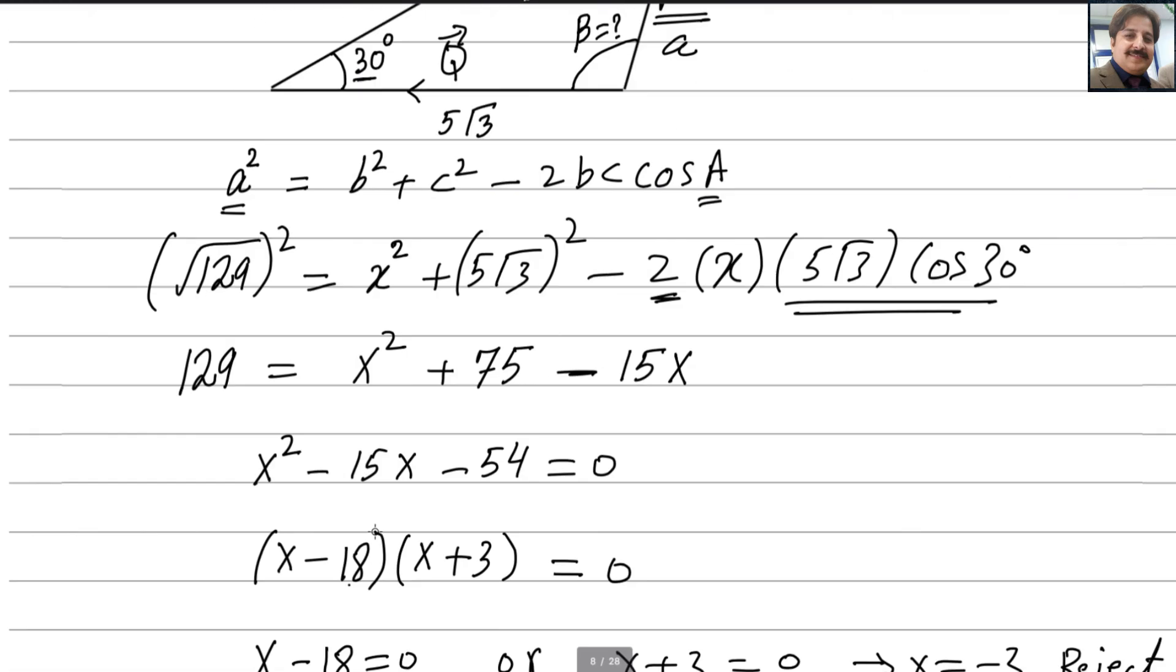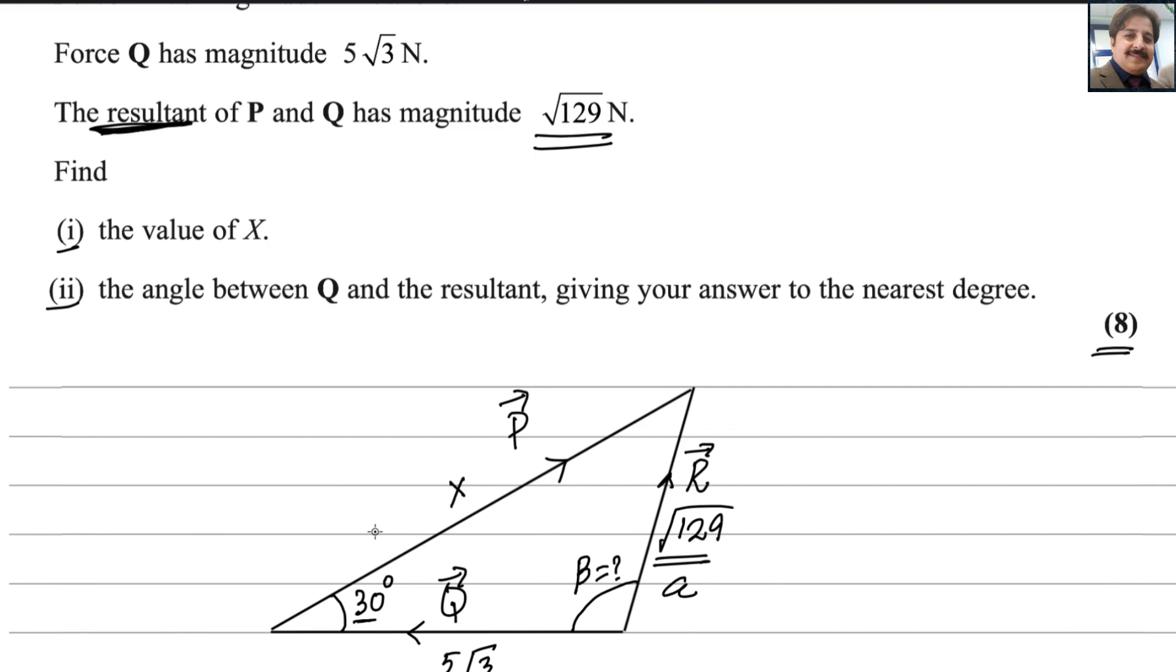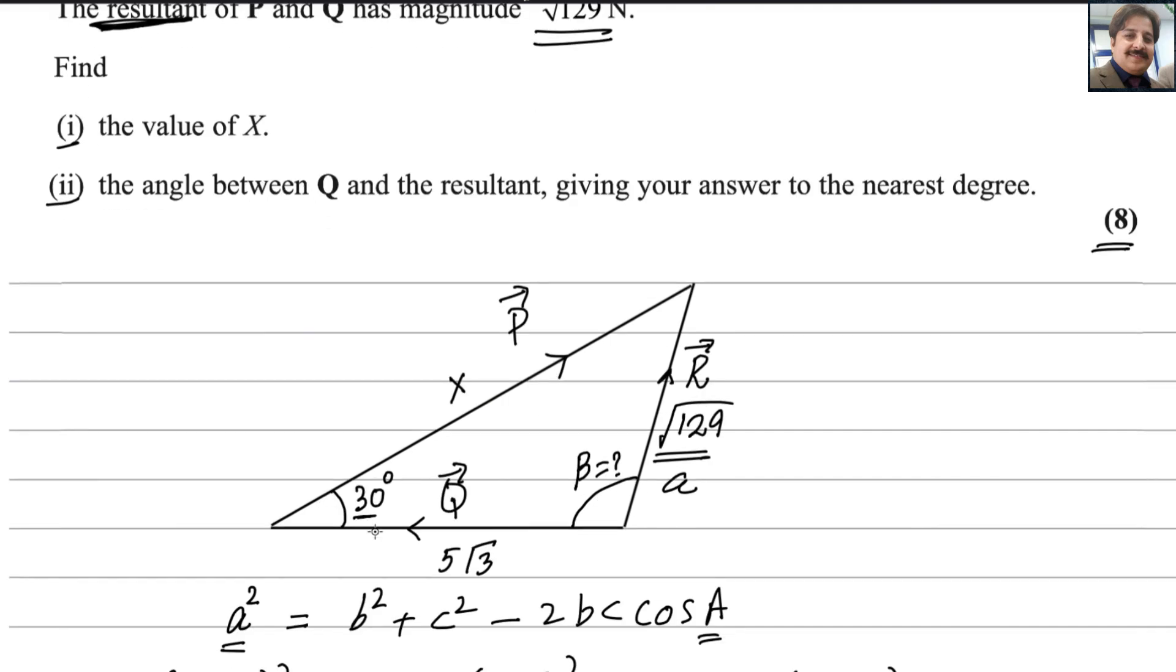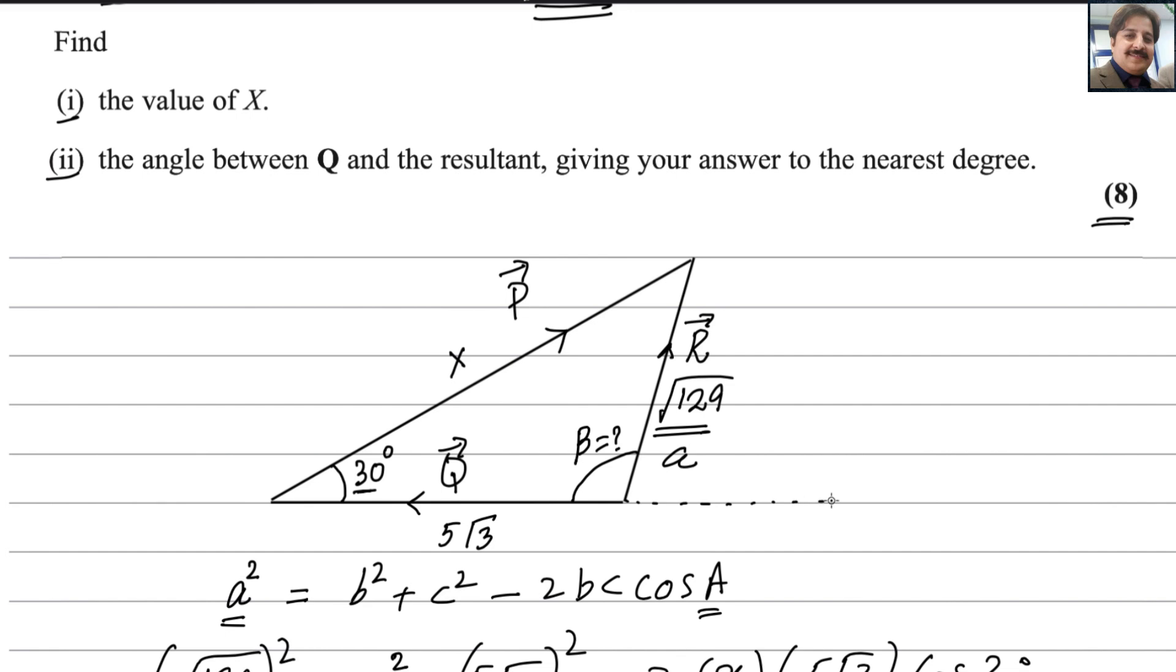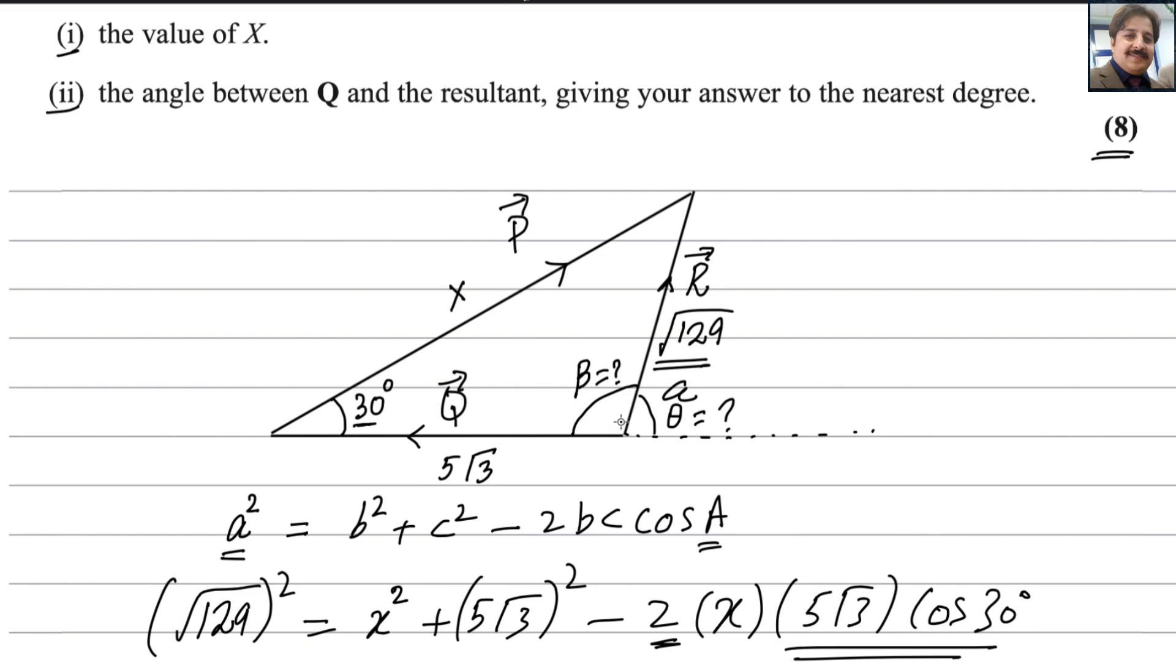Actually, this is the angle that is making this one. Angle between Q and resultant force, we need to find this angle. We already got beta but unfortunately our diagram is not exactly according to scale. That angle what we found that is less than 90, so it's supposed to be like this. Anyways, we are getting this answer here.